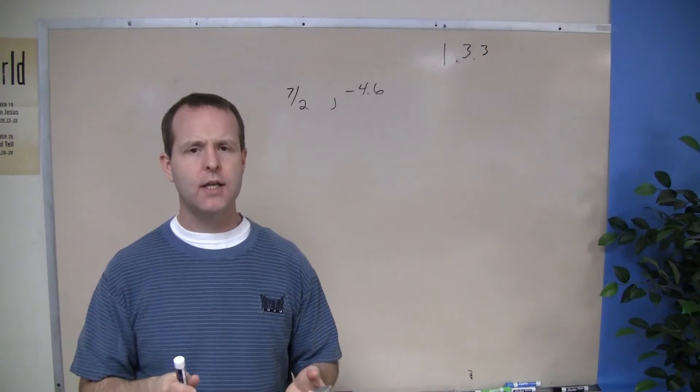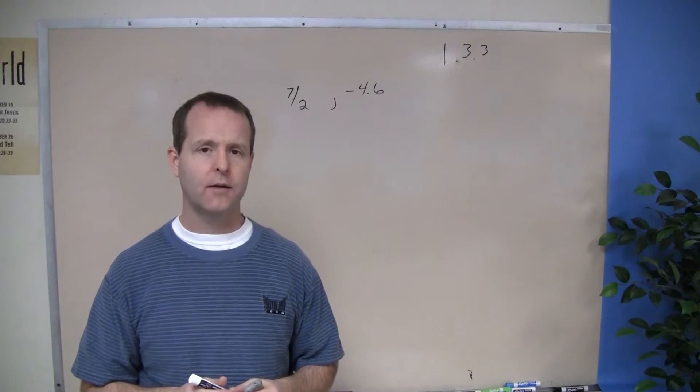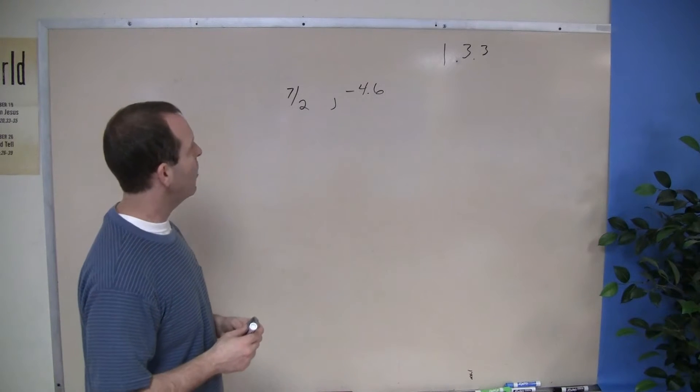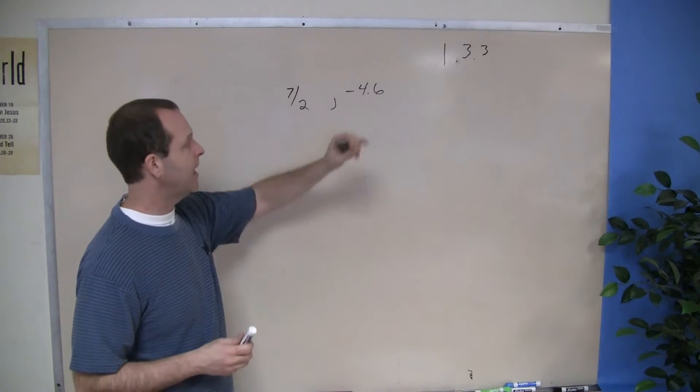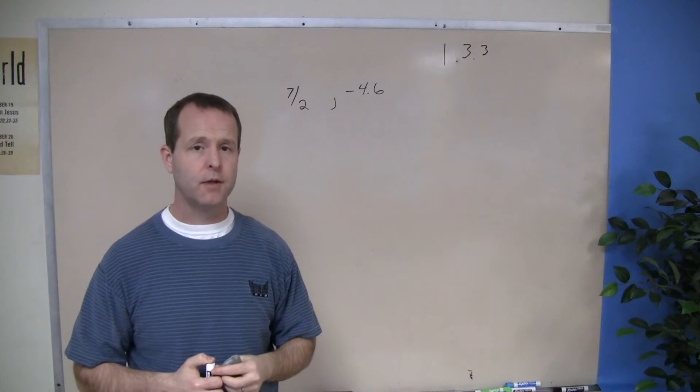There's a long list of what types of numbers they are. What I'm looking at right now, 7 halves and negative 4.6, and those are rational numbers.